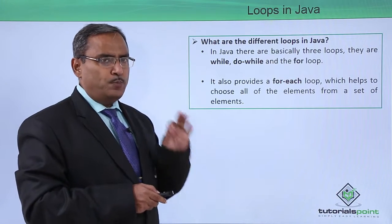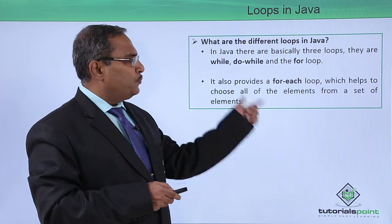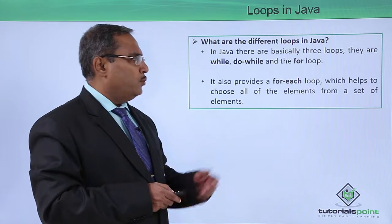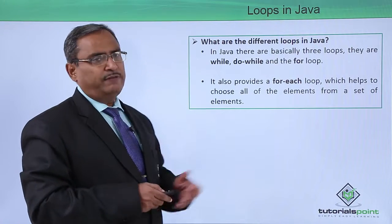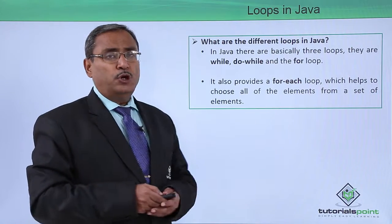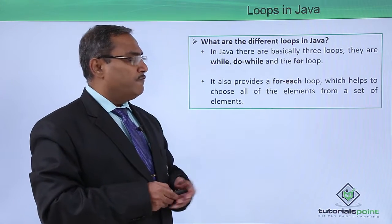These are the three basic looping constructs available in Java programming. It also provides a for-each loop, which helps to choose all elements from a set of elements. That is another kind of looping construct available in Java.